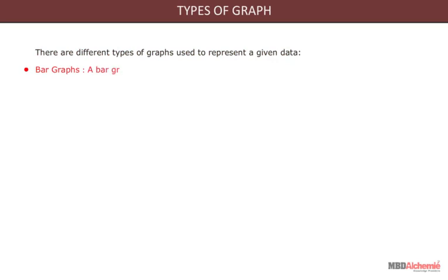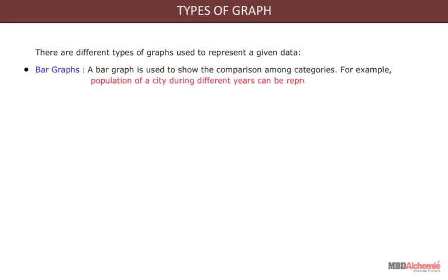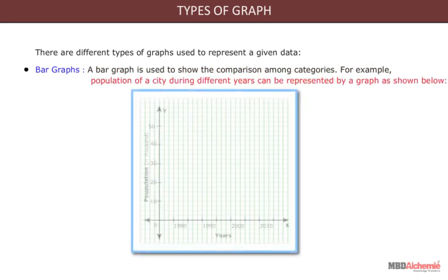Bar graphs. A bar graph is used to show the comparison among categories. For example, population of a city during different years can be represented by a graph as shown below.